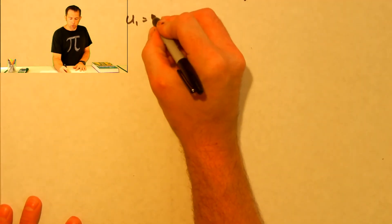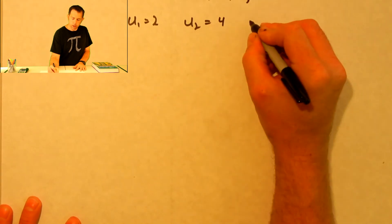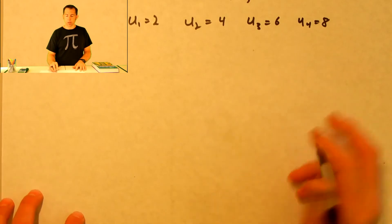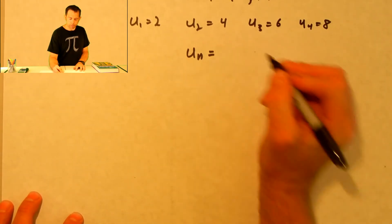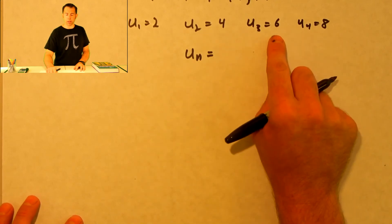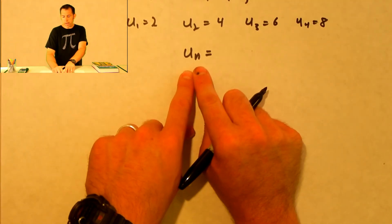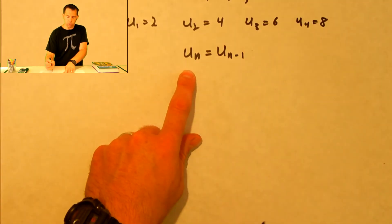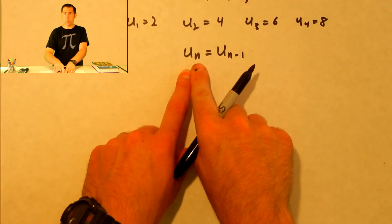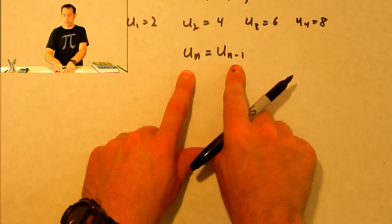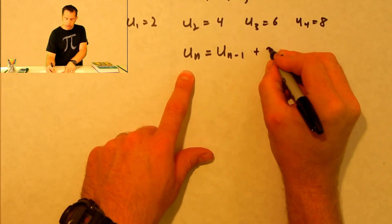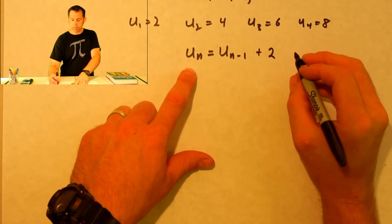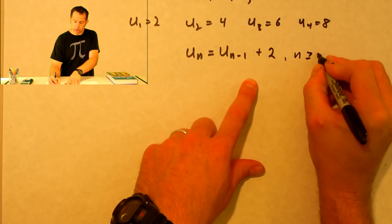So U sub 1 is 2, U sub 2 is 4, U sub 3 is 6, and U sub 4 is 8. Notice every term is just 2 more than the last one. The term that comes before U sub n is U sub n minus 1, so every term is 2 more than the preceding one. Therefore, U sub n equals U sub n minus 1 plus 2. This is the recursive form of that sequence, and it works only if n is greater than or equal to 2.